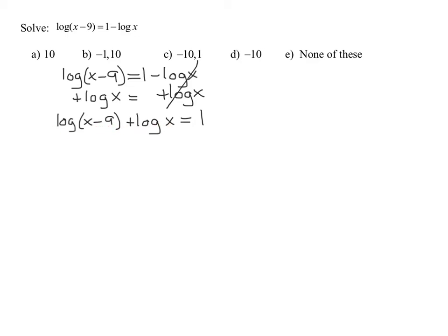Hopefully you remember the property of logs that says log base b of m plus log base b of n—if I add two logs with the same base together, I get log base b of m times n. If I add the logs, it turns into the log of a product. So on this side, I'm adding these two logs. They have a 1 in front of them.